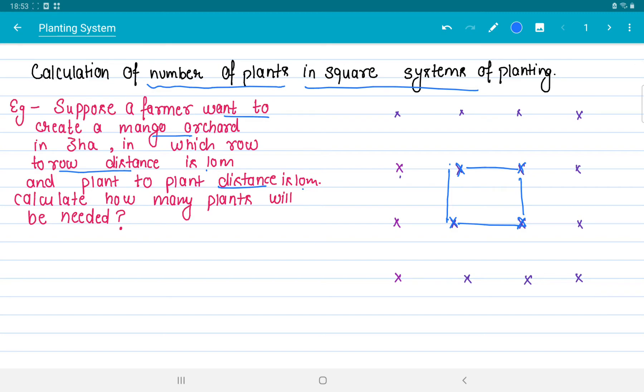To estimate the total number of plants: area in square meters by planting distance in meters.